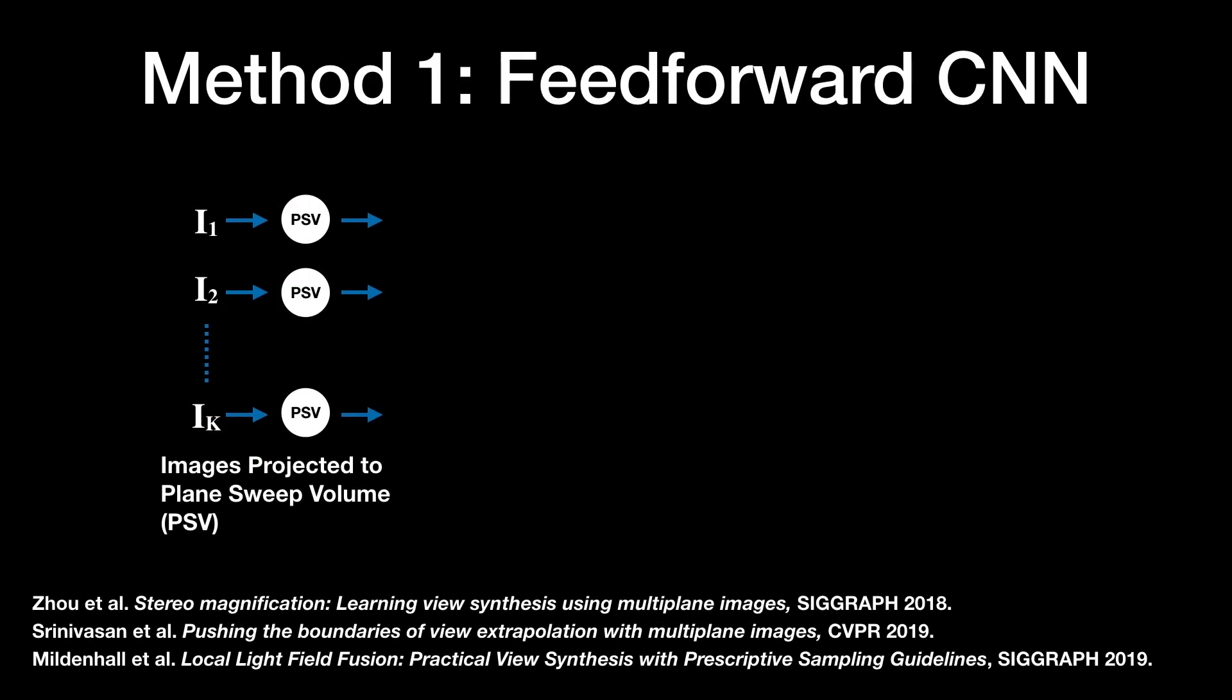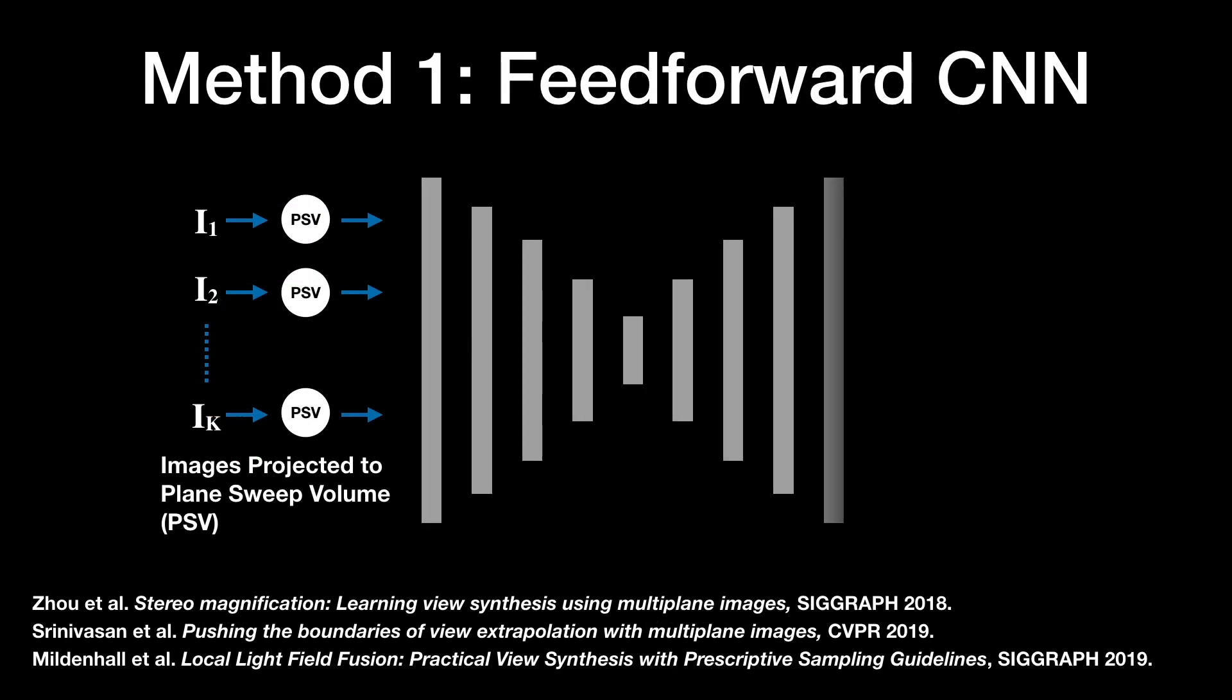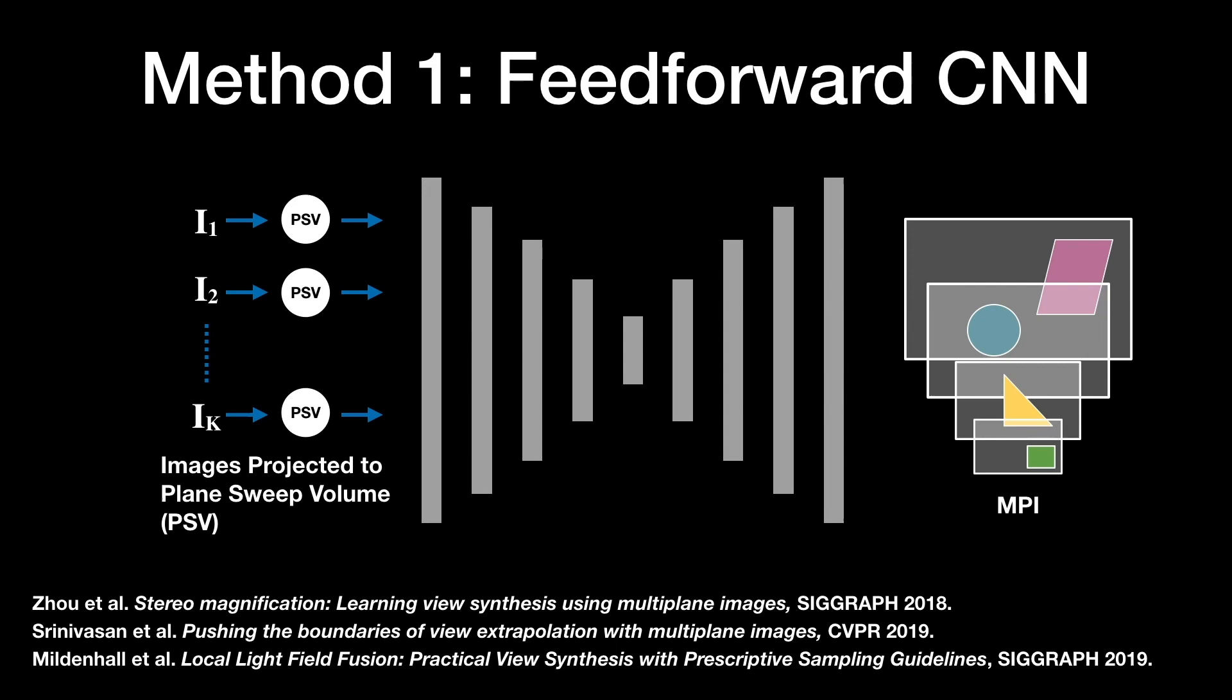One approach is to use a standard feedforward deep network to predict the MPI. In these methods, the images are typically input as plane sweep volumes, allowing the network to more efficiently combine input images at different poses. Such approaches rely on network layers to model the visibility between the input views and the predicted MPI, which can be expensive.